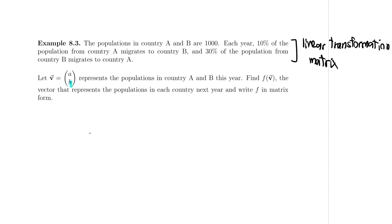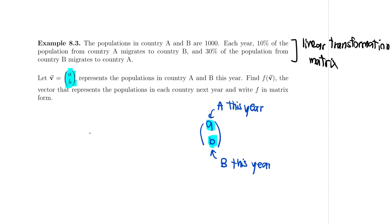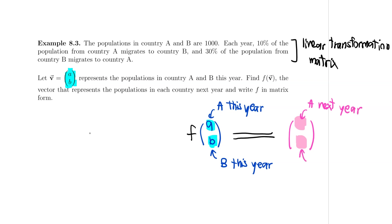In other words, if I let vector AB be the current population in country A and country B, where little a is the current population in country A — the number of people in country A this year — and little B is the number of population in country B this year, I can think of what happens from year to year as a linear transformation that sends this vector AB to some other vector, where the numbers are the population in country A and country B next year.